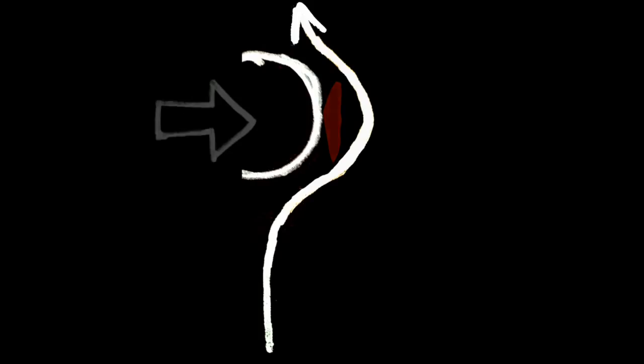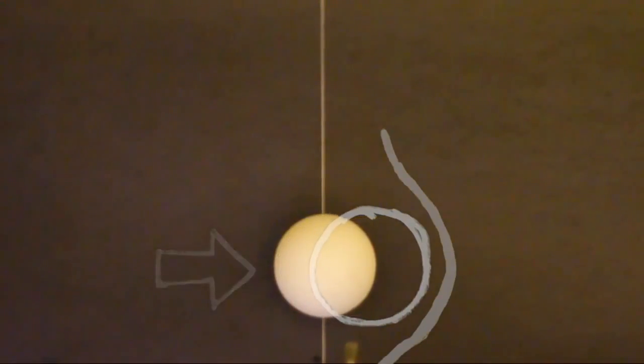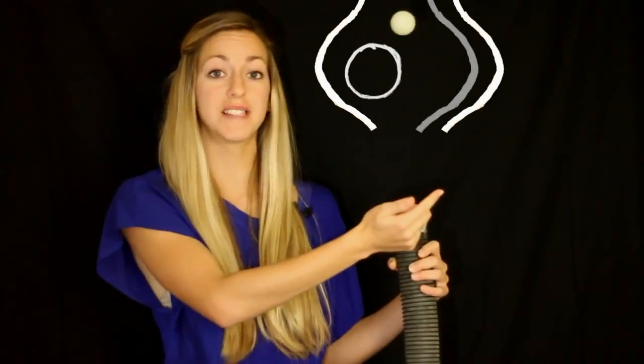The ball is also pulled toward the area of low pressure. We can see this if we blow on one side of a ball. It moves toward the side we blew on. Now if the ball moves to one side of the airstream, the effect is increased on the opposite side and the ball is sucked back into the middle.